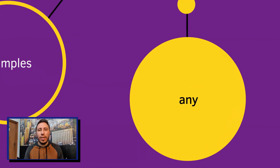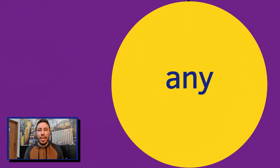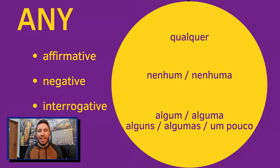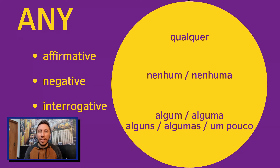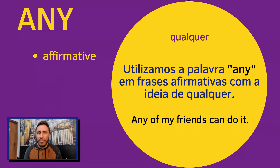And now, guys, let's take a look at the last word — the word any. Any is the only word that is going to have a lot of translations. You can translate any as qualquer, you can also translate it as nenhum or nenhuma, and you can also translate it as algum, alguma, alguns, algumas, um pouco de. If you are creating an affirmative sentence, you are going to use any with the idea of qualquer.